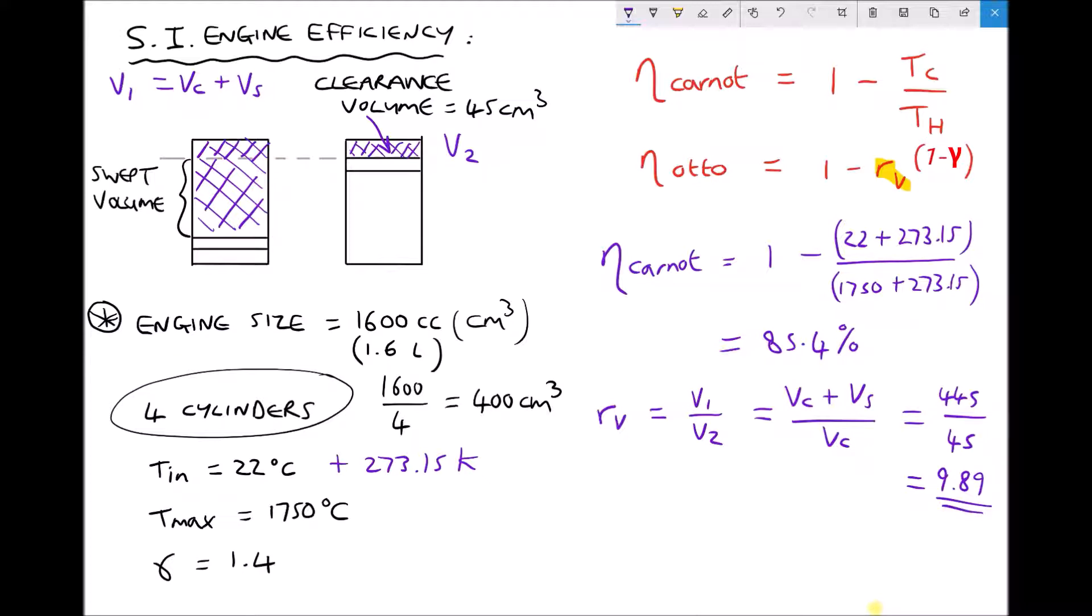The final step is to calculate our Otto efficiency. The Otto efficiency is 1 minus the volumetric compression ratio 9.89 raised to the power of 1 minus gamma. We've already said that gamma for an adiabatic process is 1.4. 1 minus 1.4 is minus 0.4. Running that through the calculator gives us an Otto efficiency equal to 60.0%.